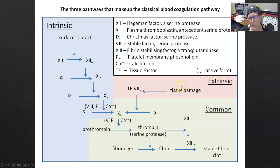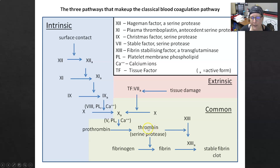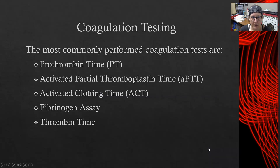On the extrinsic pathway, tissue damage activates factor 7 into factor 7a, and 7a activates factor 10 into 10a. Once we have 10a we're in the common pathway. Factor 10a with factor 5, platelet membrane phospholipid, and calcium activates prothrombin into thrombin. Thrombin with serine protease then activates fibrinogen into fibrin, and also activates factor 13 into 13a. With fibrin and 13a, there is formation of a stable fibrin clot.